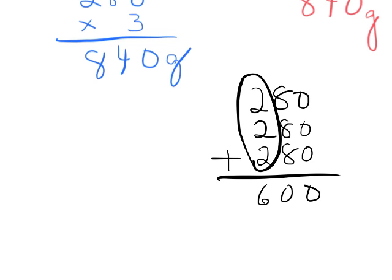We could have added the 200s and get 600, and then we could have added 80 plus 80 plus 80 and get 240, because some students might prefer it that way, and we would get 840 grams.